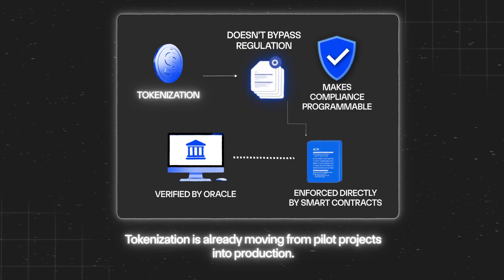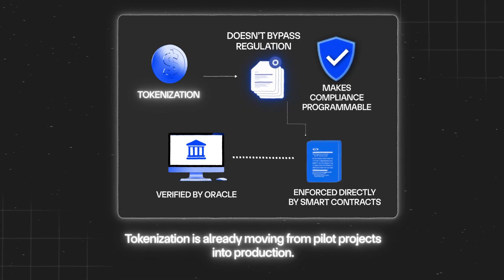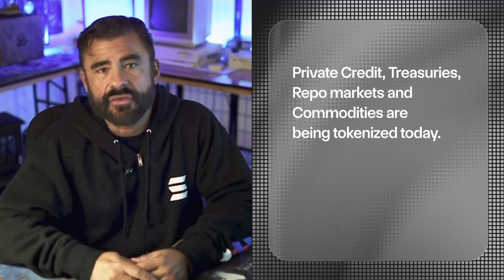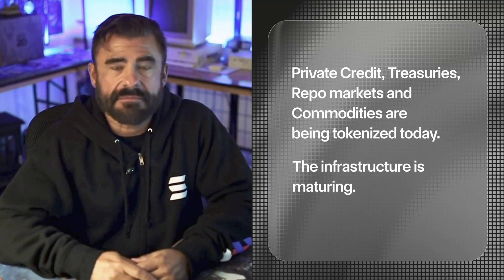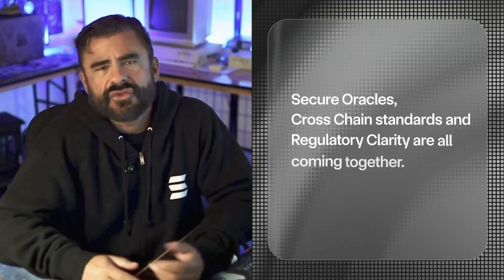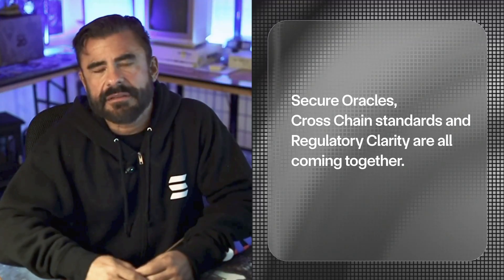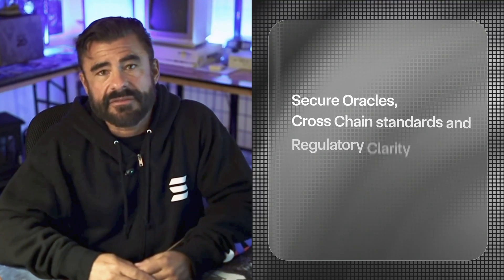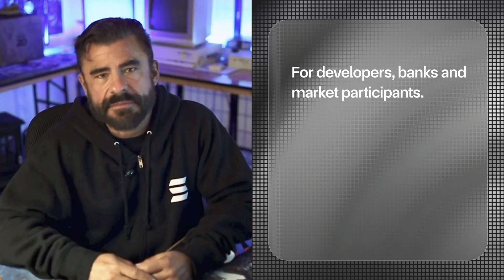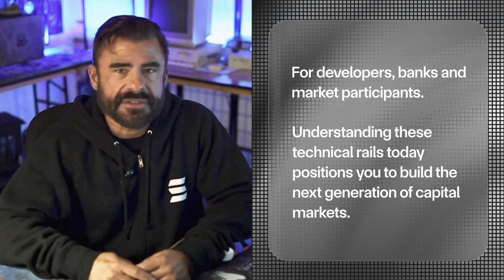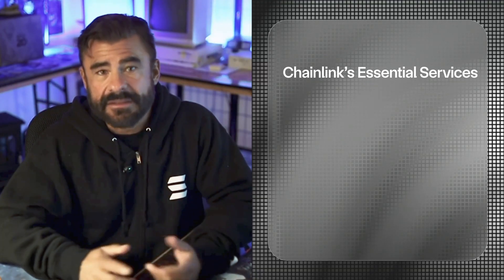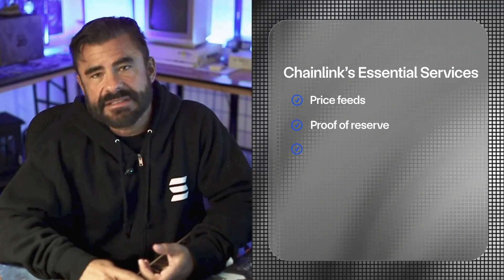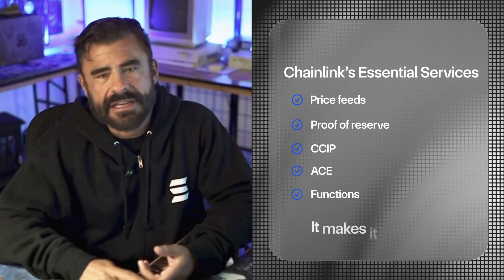Tokenization is already moving from pilot projects into production. Private credit, treasuries, repo markets, and commodities are being tokenized today. The infrastructure is maturing — secure oracles, cross-chain standards, and regulatory clarity are all coming together. For developers, banks, and market participants, understanding these technical rails today positions you to build the next generation of capital markets. Chainlink is providing the essential services: price feeds, proof of reserve, CCIP, ACE, and functions — it makes it all possible.